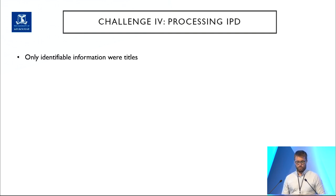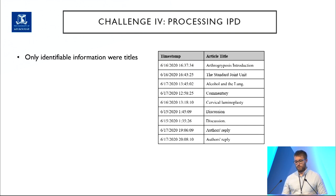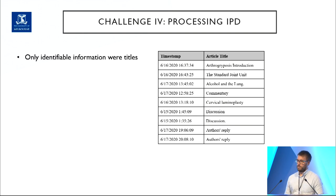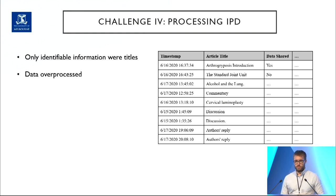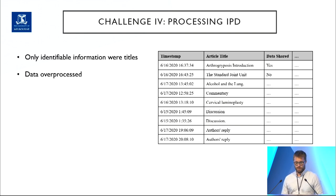By far the biggest challenge with the fourth issue was that the only information we had about the articles the meta-researchers studied was the title. Without any other further information — like a DOI, a journal, or pagination — it's quite difficult to figure out what a paper refers to. We were stuck in some circumstances, though it was salvageable in others. The other issue was that data was often over-processed — important outcome measures were often dichotomised into yes-no. For example, the number of studies with data publicly available versus available on request were collapsed into a single yes, which wasn't what we wanted.